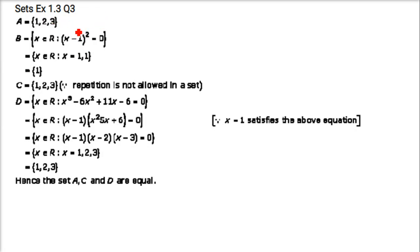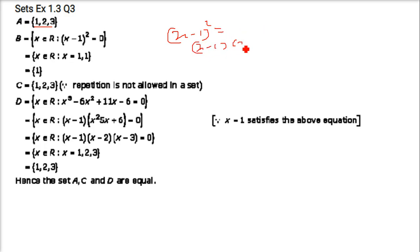Next question: which of the following sets are equal? Equal sets have exactly the same elements and the same count. Set A is {1, 2, 3}. Set B is x such that (x−1)² = 0, which gives x = 1 only, so B = {1}. Set C is {1, 2, 2, 1, 2, 3} — removing repeats gives {1, 2, 3}.